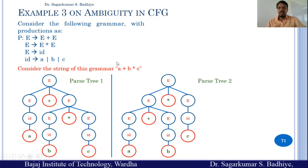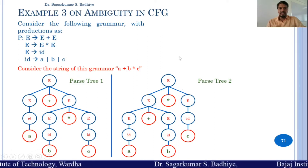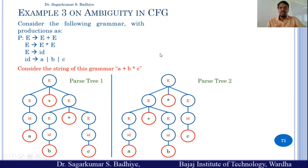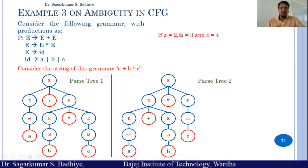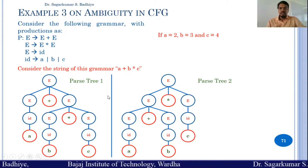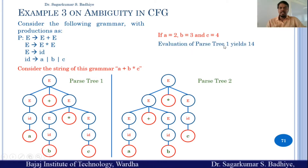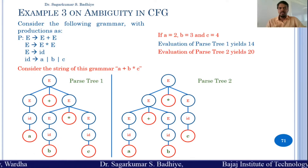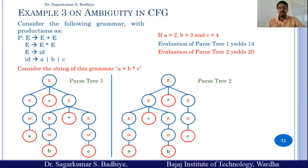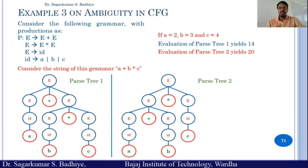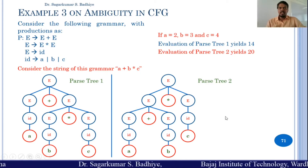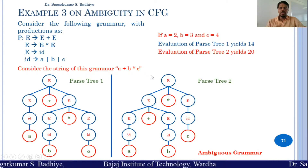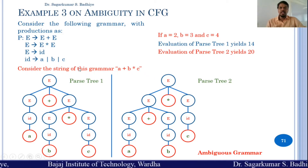These two different parse trees derive the same string a + b * c, which is due to ambiguity in the given grammar. This creates confusion in evaluation: if a = 2, b = 3, c = 4, then the first parse tree yields 14, whereas the second parse tree yields 20. Thus the given grammar is ambiguous, as there are two parse trees (or two leftmost derivations) to derive the same string.